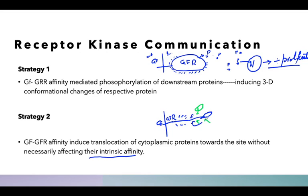These cytoplasmic proteins bring up that attention, queue up to the receptor, and bind with the growth factor receptor. This binding results in a phosphorylation of this complex. This cytoplasmic regional protein is actually responsible for a further downstream communication to the nucleus.